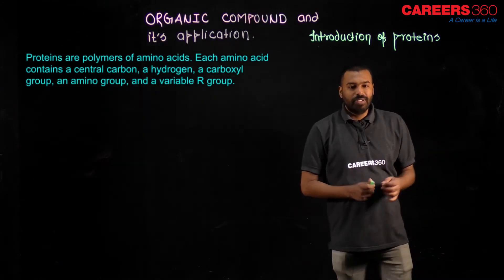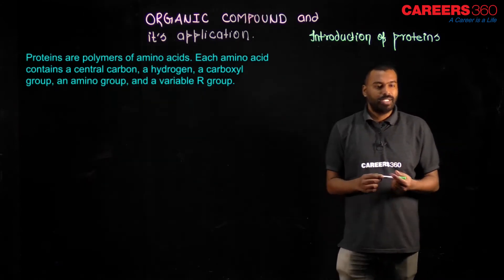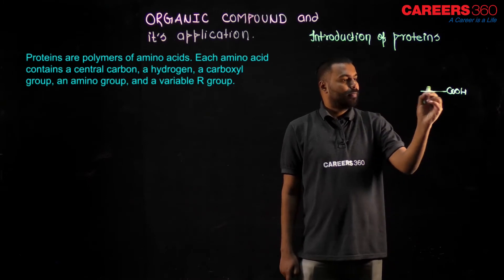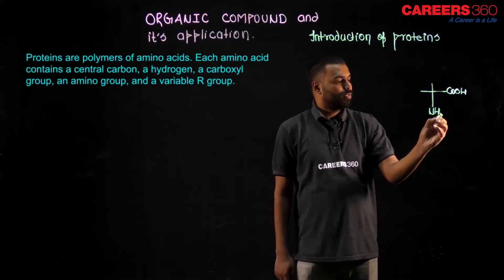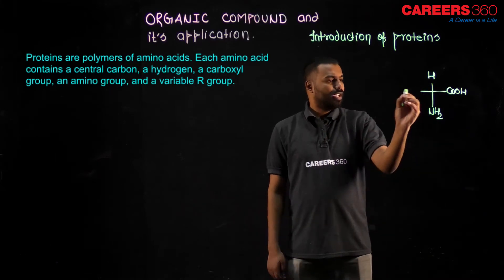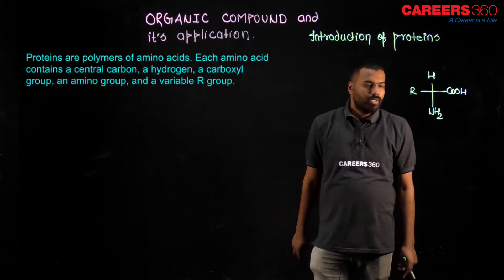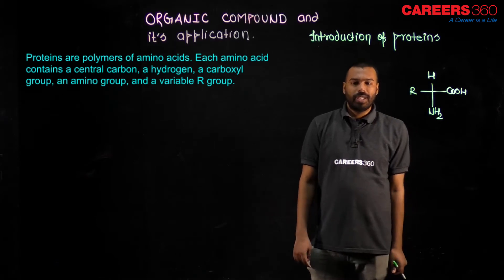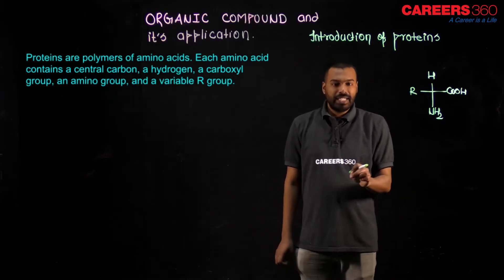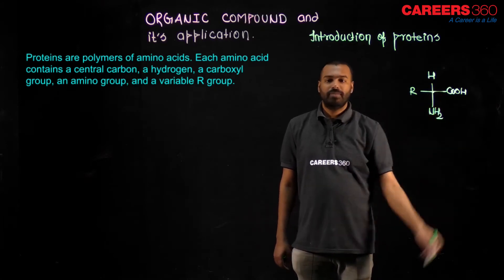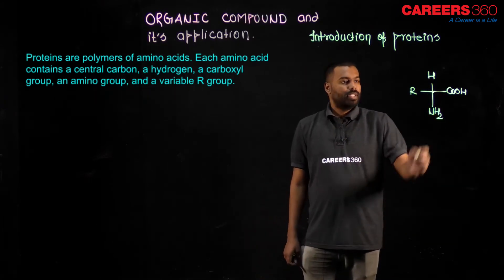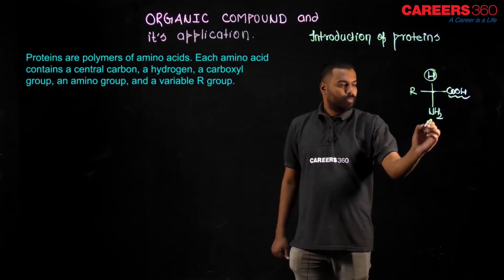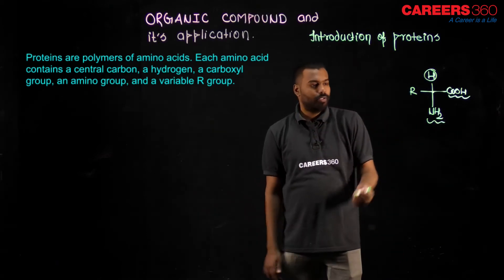Proteins are polymers of amino acids. An amino acid is any compound that contains a COOH group, an NH2 group, an H, and an R group. Each amino acid contains a central carbon, a hydrogen, a carboxyl group (COOH), an amino group (NH2), and a variable R group.